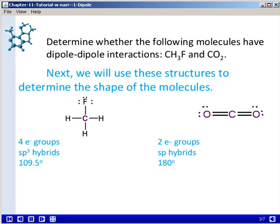In the case of carbon dioxide, there are two electron groups or electron clusters on the central carbon atom, and that leads to the formation of sp hybrid orbitals that are arranged 180 degrees from one another.